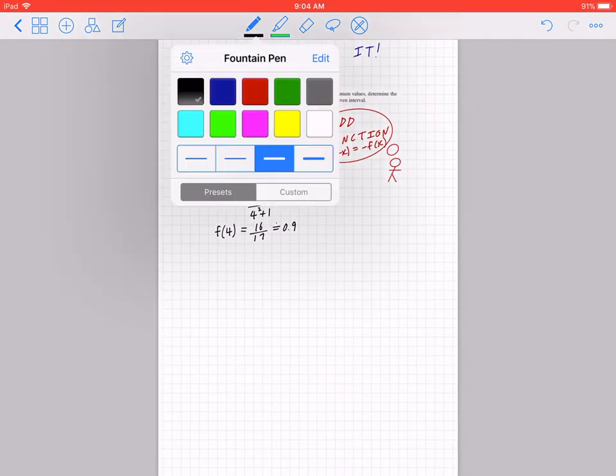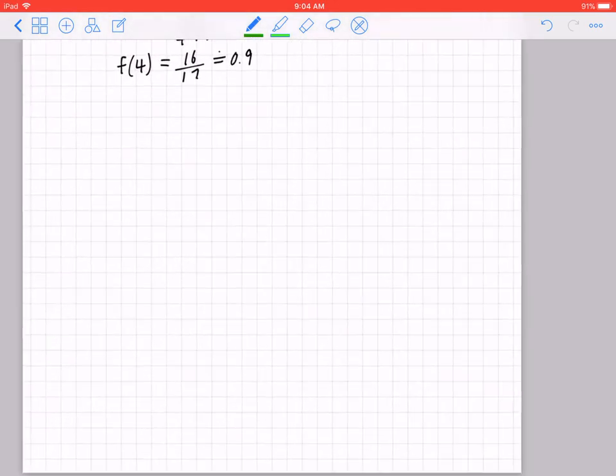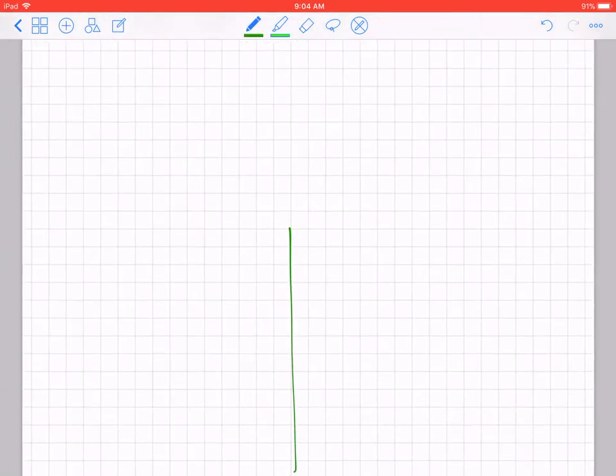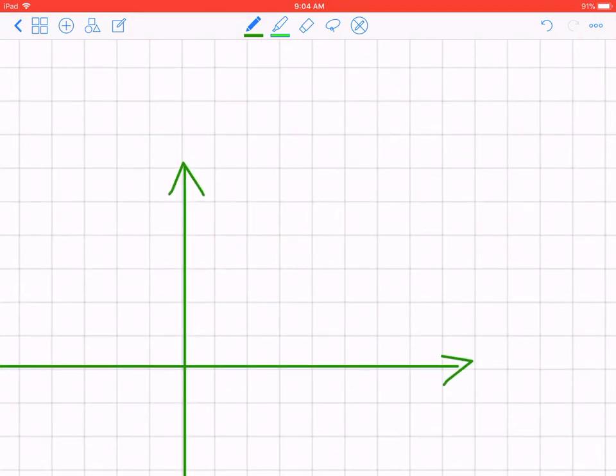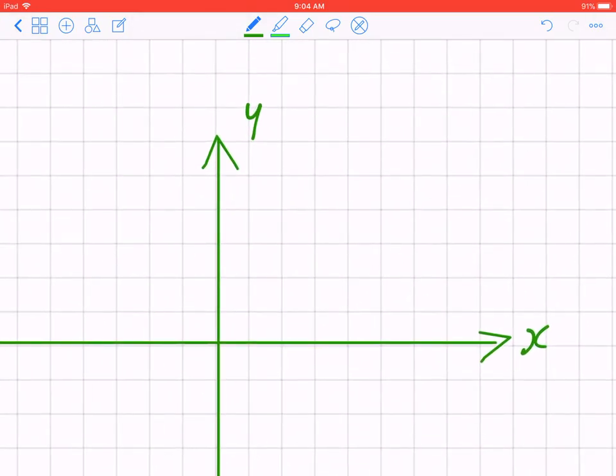Now before we keep going, here's what I would strongly recommend everyone to try. Always graph as you go. Do not graph at the end. If you graph as you go, you can see every step along the way in case there's a mistake. So far we have two points. Let's label this on the graph first.